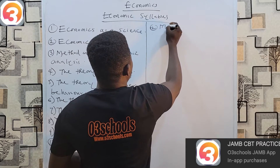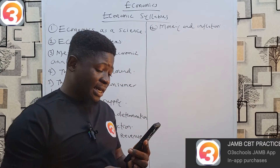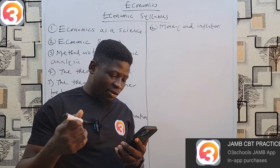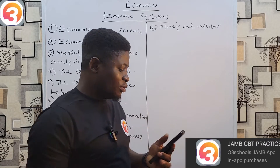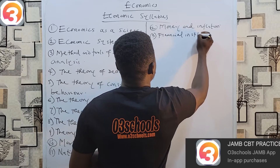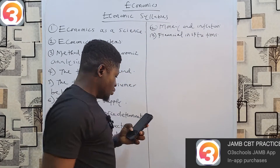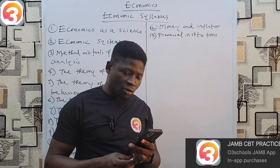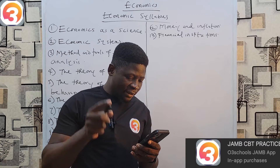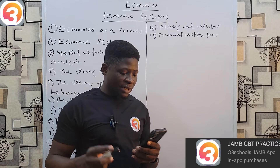Under Money and Inflation, look at the types and functions of money, the value of money, monetization, inflation, and deflation. Number thirteen is Financial Institutions. Under financial institutions, look at the types and functions of financial institutions, the role of financial institutions, money and capital markets, financial sector regulations, deposit money banks and the creation of money, monetary policy and its instruments, and challenges facing financial institutions in Nigeria.